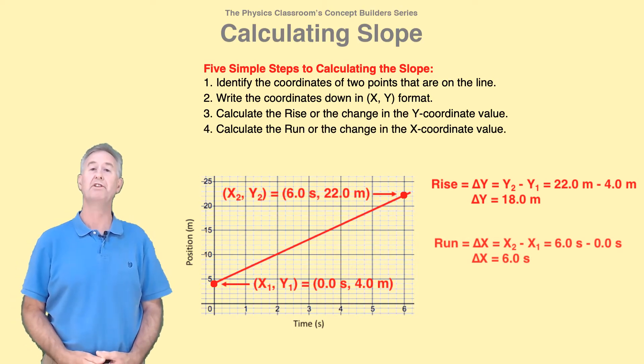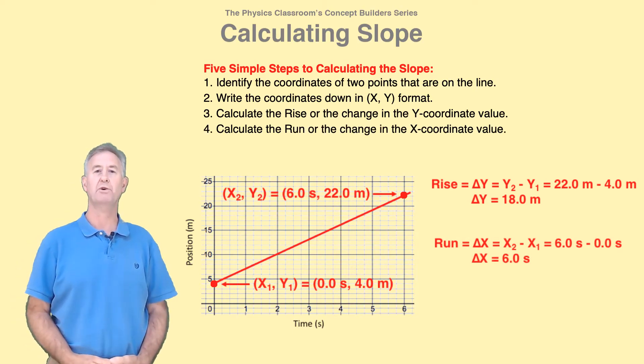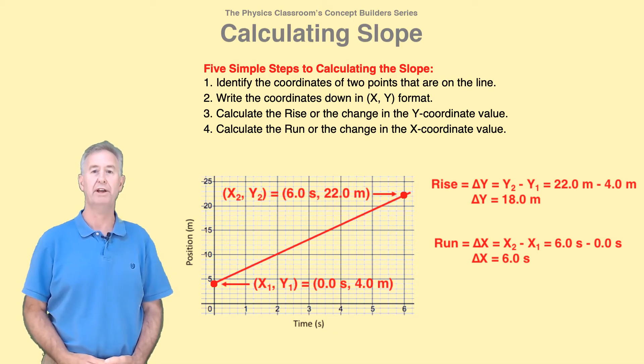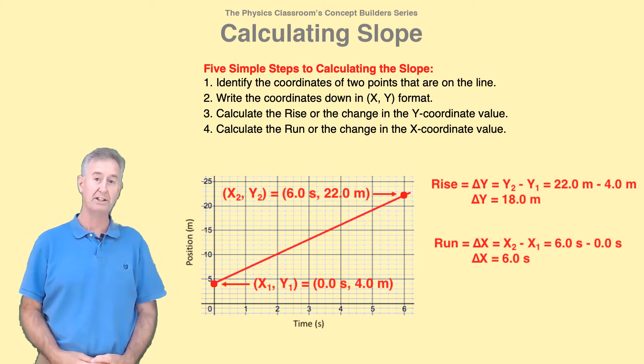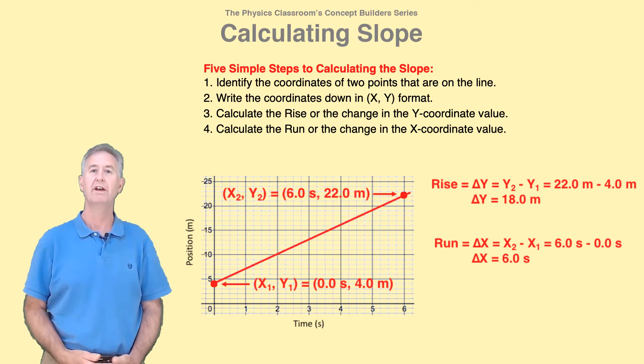Fourth, calculate the run, or the change in the x-coordinate value. That would be x2 minus x1, or 6.0 seconds minus 0.0 seconds. Delta x is 6.0 seconds.